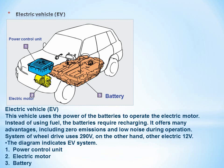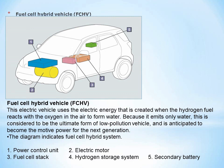The EV system components are: 1. Power control unit, 2. Electric motor, 3. Battery. Fuel cell hybrid vehicle: This electric vehicle uses the electric energy created when hydrogen fuel reacts with oxygen in the air to form water. Because it emits only water, this is considered the ultimate form of low-pollution vehicle and is anticipated to become the mode of power for the next generation. The diagram indicates the fuel cell hybrid system: 1. Power control unit, 2. Electric motor, 3. Fuel cell stack, 4. Hydrogen storage system, 5. Secondary battery.